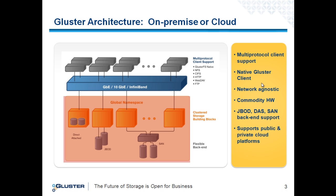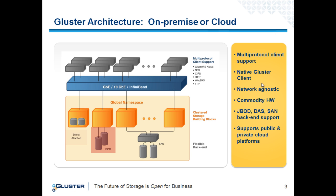That global namespace includes all of the back-end storage capacity, and we're very flexible in the way we allow you to attach back-end storage. We can attach direct-attached or standard JBOD arrays, and we can even sit in front of a SAN and make it look like a file system. We're network agnostic, supporting standard gigabit, 10 gigabit, or InfiniBand networks. We support multiple protocols on the client side and can scale to thousands of clients, hundreds of storage servers, and petabytes of capacity.